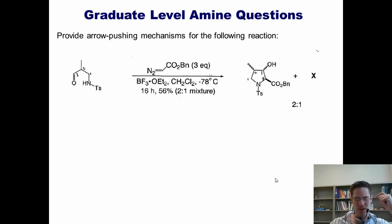For whatever reason, I found this question here to be particularly daunting. Once again, the examining professor asked us to provide an arrow pushing mechanism for the conversion of this starting material into this product. As with the previous examples, I was completely clueless. The professor then asked a follow-up question. Please identify the structure of byproduct X.